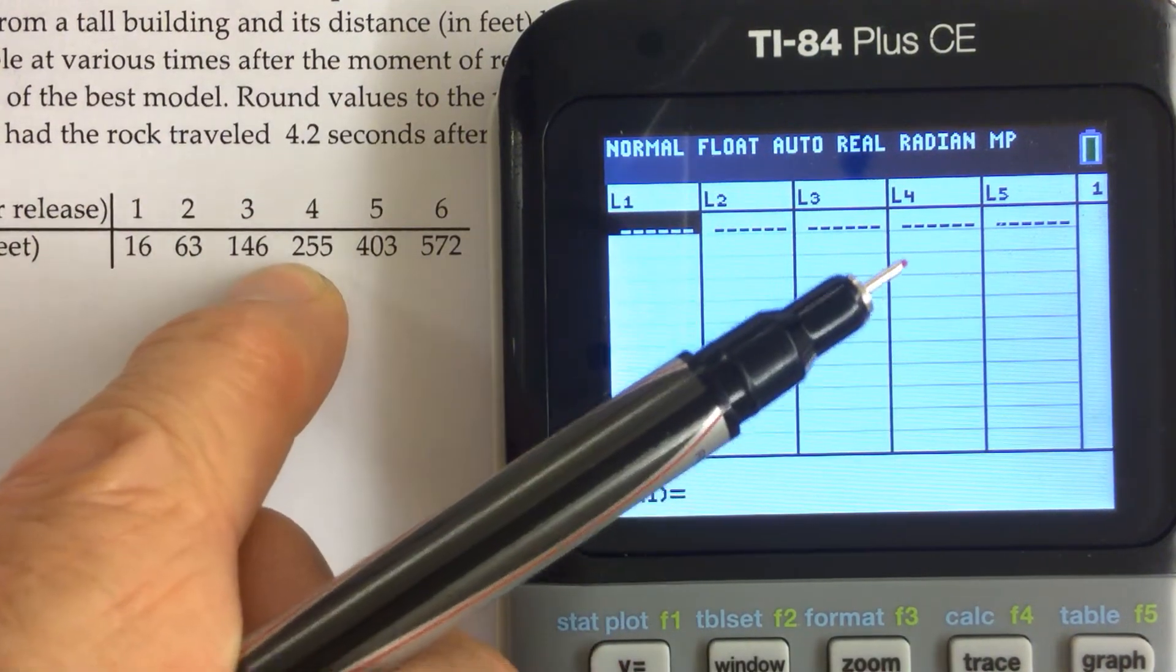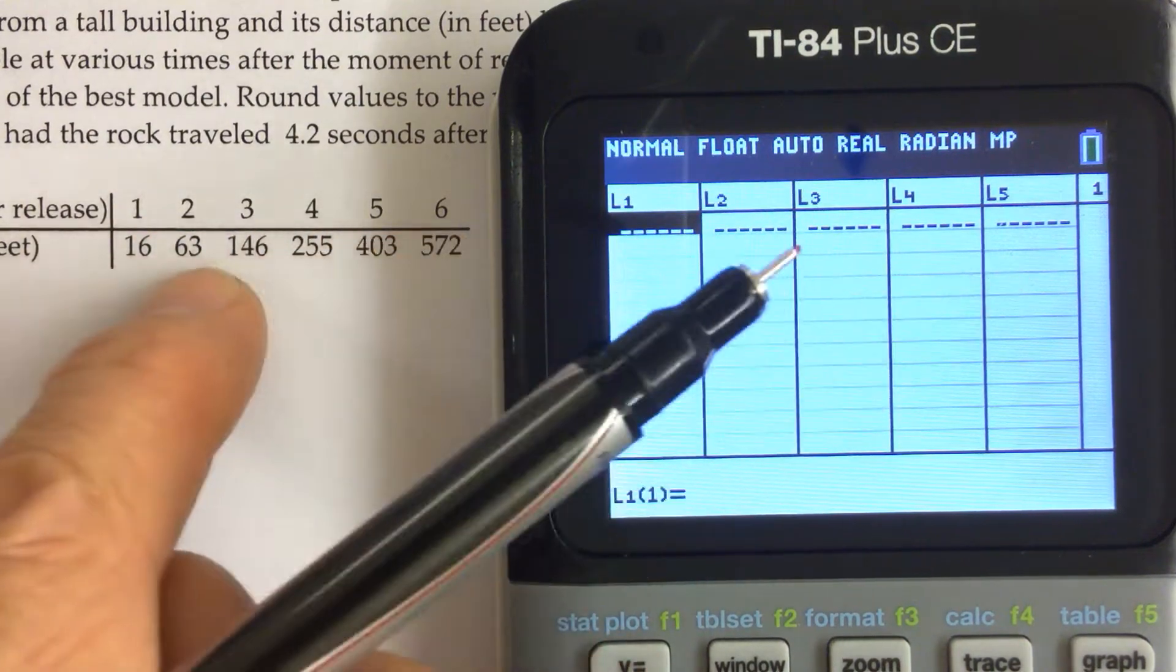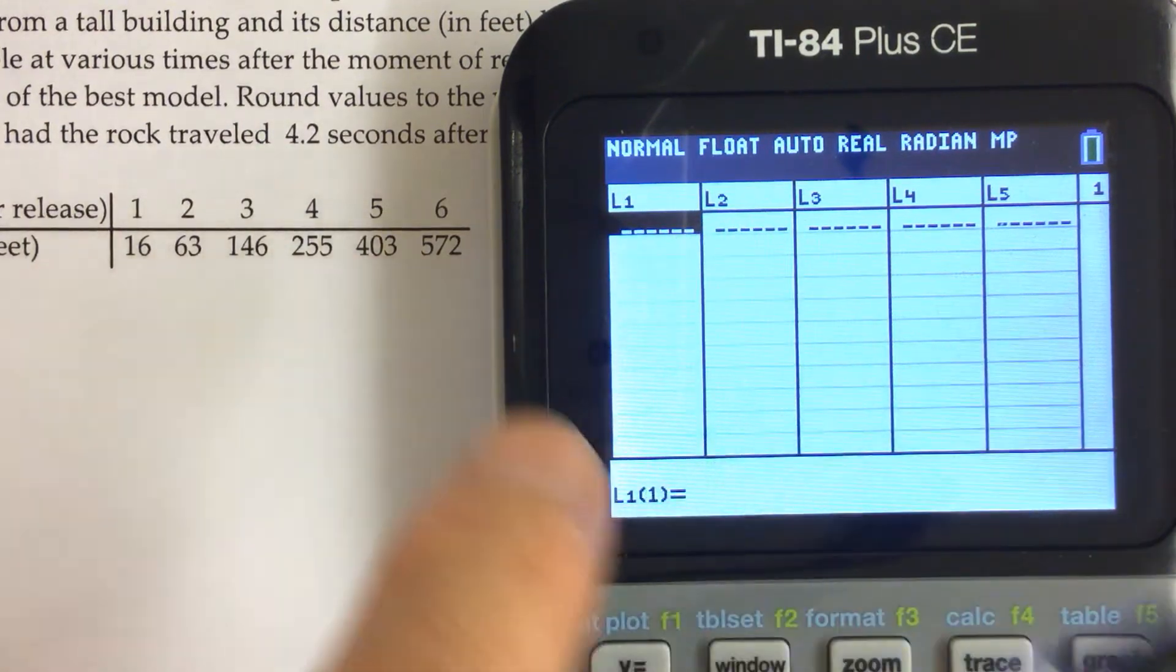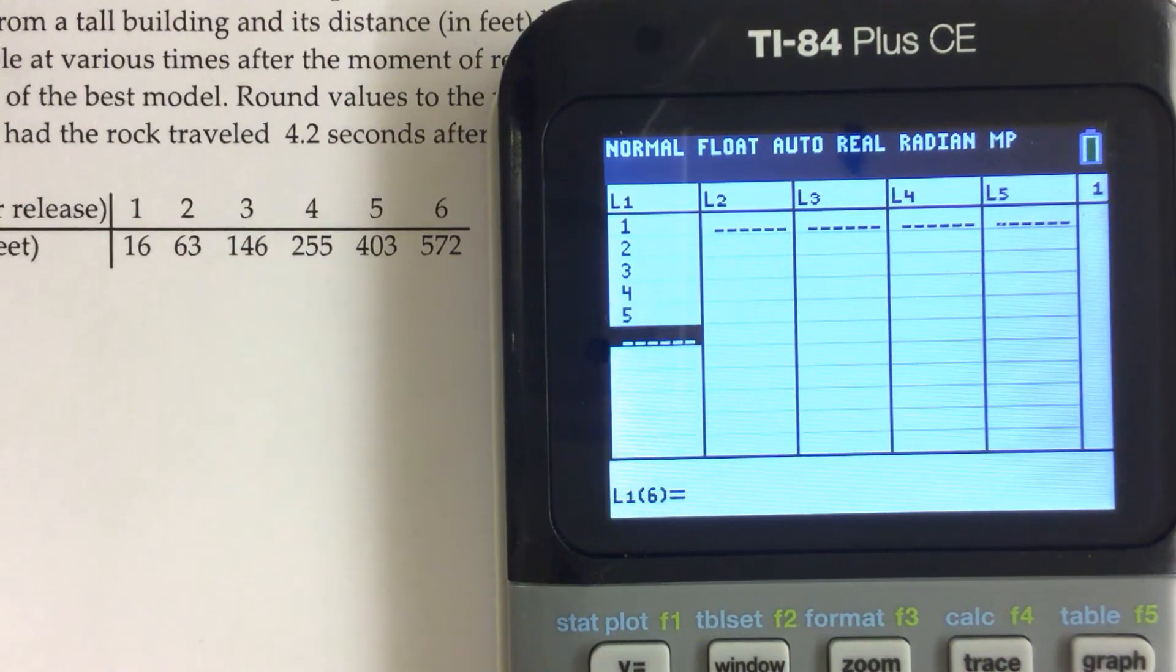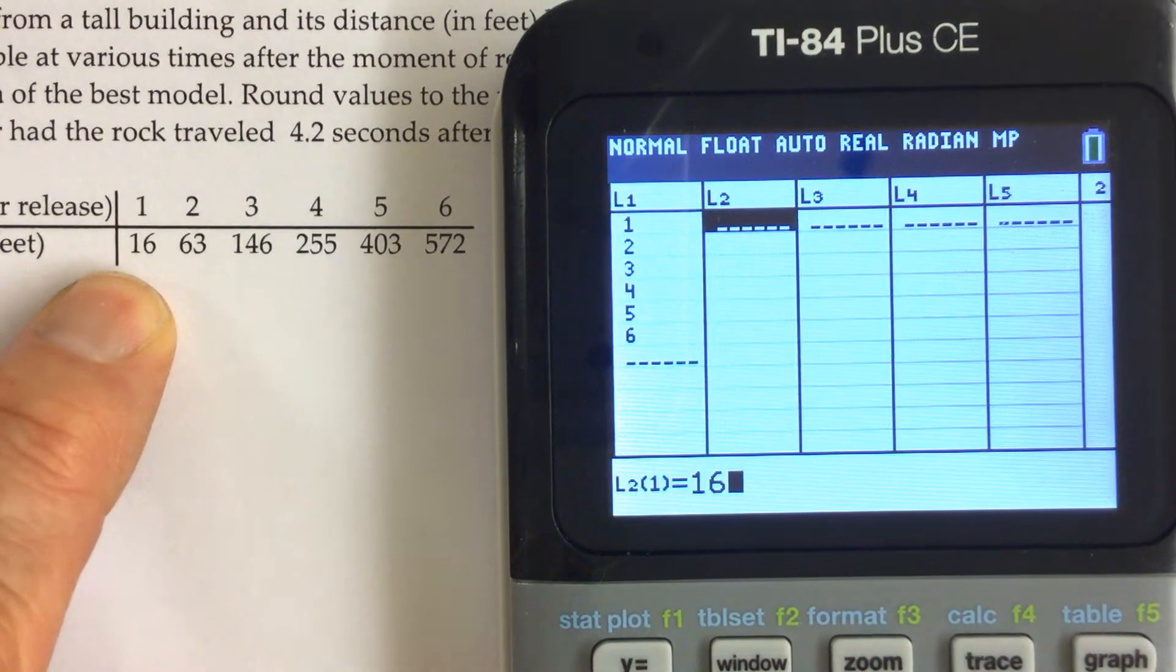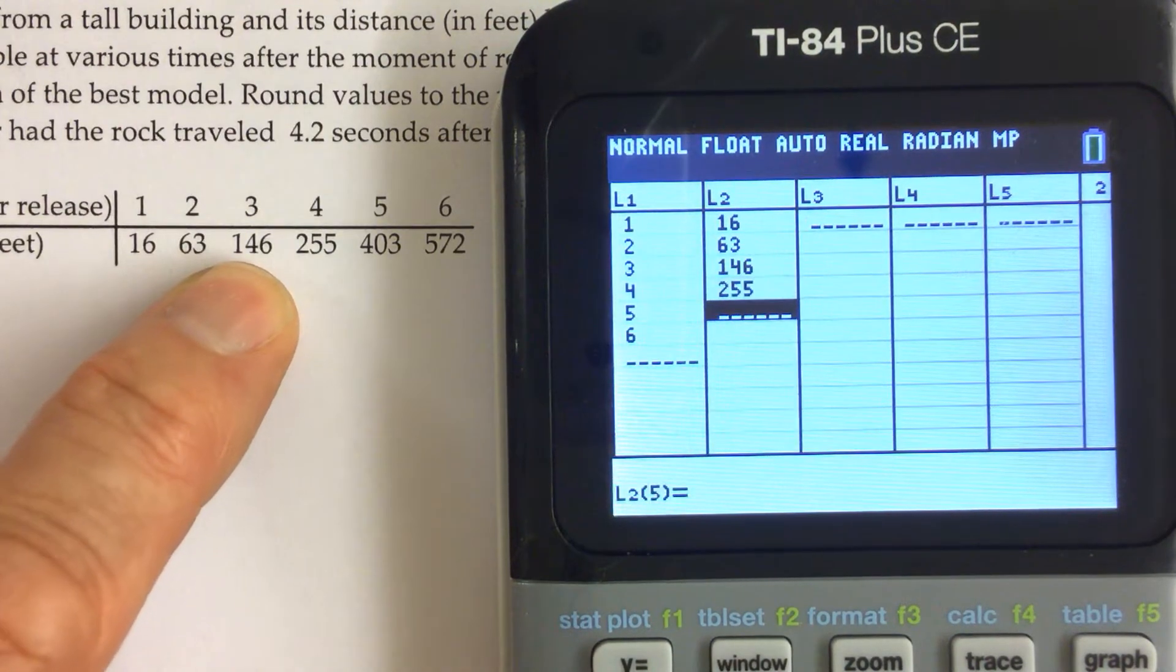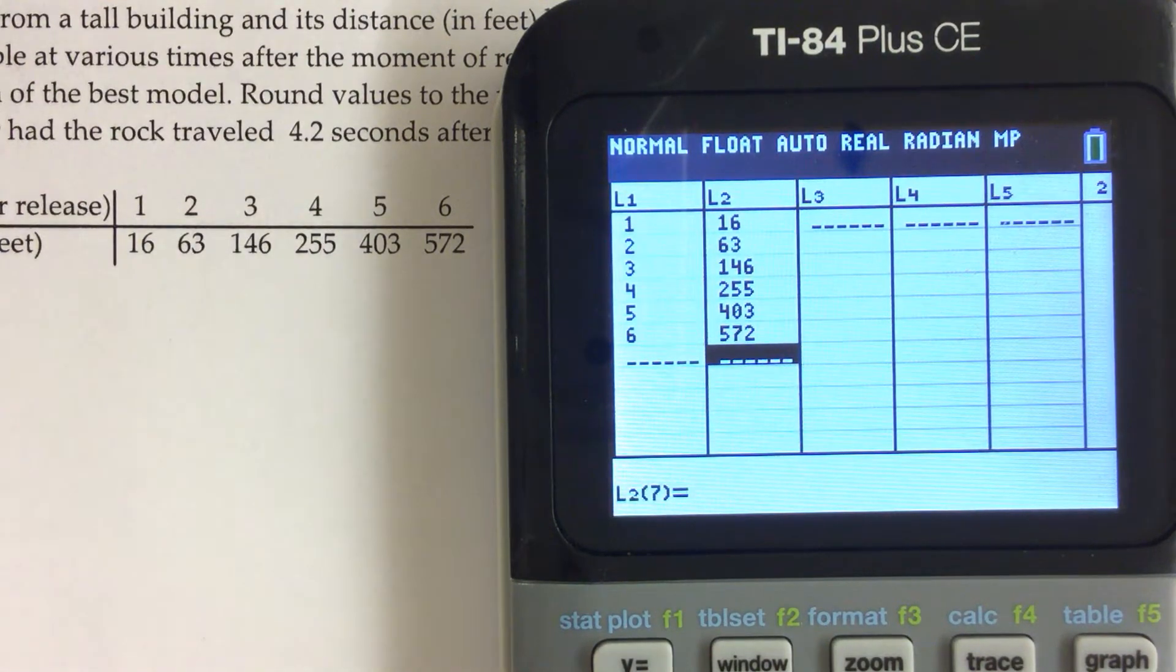So our x values are the ones given first. The distance in feet depends on the seconds after the release. So the independent variable is the number of seconds, and the dependent variable is the distance in feet. So I'm just going to go ahead and type in 1 through 6, double check that all the numbers are in there, and go to my list 2 and type in all those values: 16, 63, and so forth.